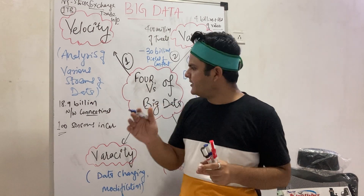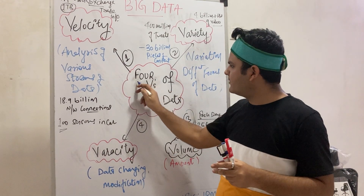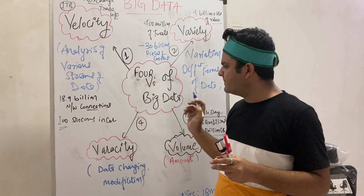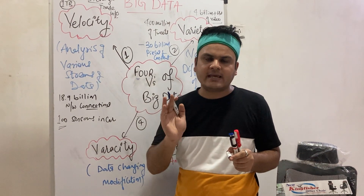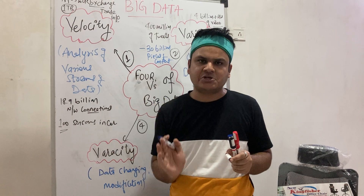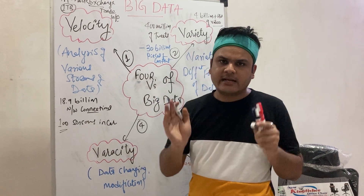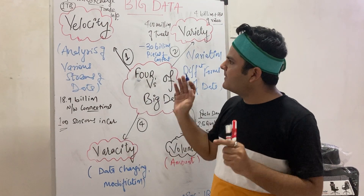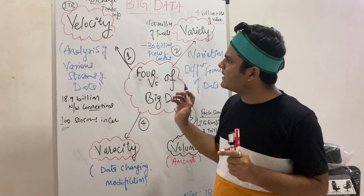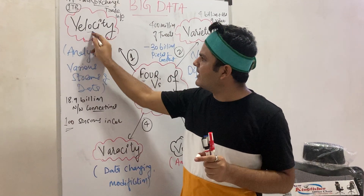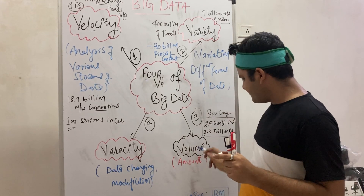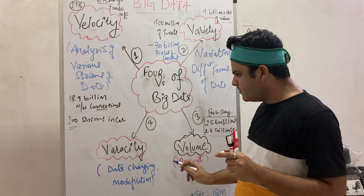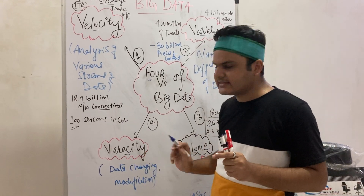If we talk about the four V's of big data, IBM scientists and the McKinsey Global Institute have, in their reports, broadly broken it down into four components: velocity, variety, volume, and veracity.